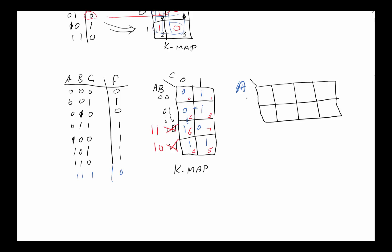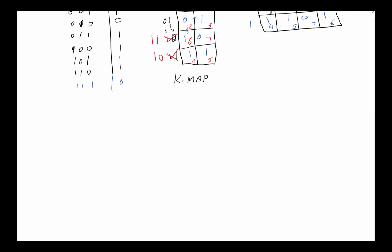For completeness, let's also look at the alternative layout where A is on the rows and B,C on the columns. Again we use Gray code for the column ordering: 00, 01, 11, 10 — pay close attention to this, as it's one of the most common mistakes beginners make with K-maps. In this layout the minterm ordering becomes 0, 1, 3, 2, 4, 5, 7, 6. This is essentially hitting the practical limit of K-maps; beyond about four variables they become very difficult to use.